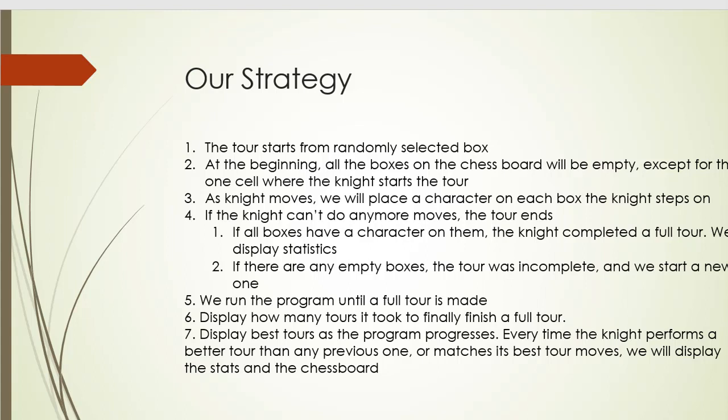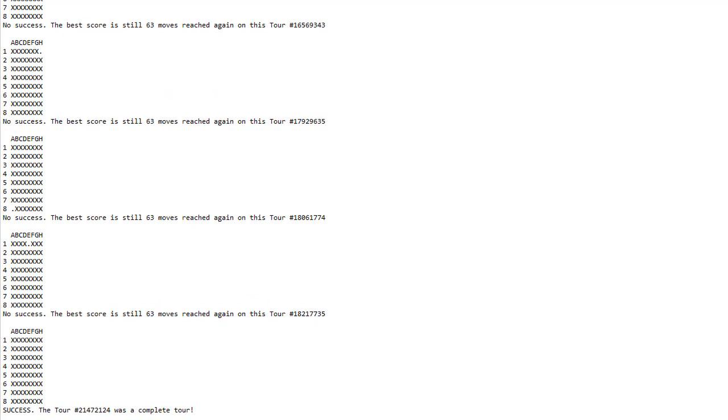So like I said we will run the program until the knight finally finds its way around the chess board. So let's have a look at possible output. So notice that at the end we display the final board which now consists of all axes which is the character for the knight that we chose.